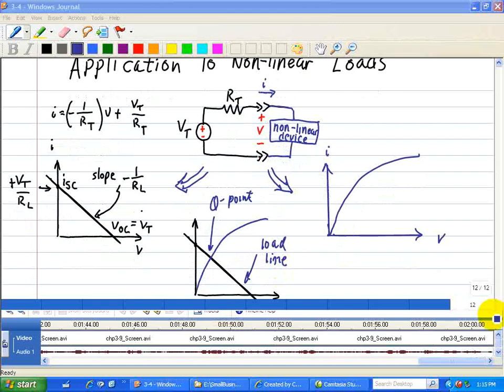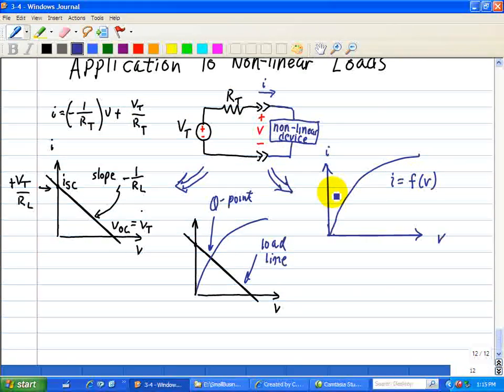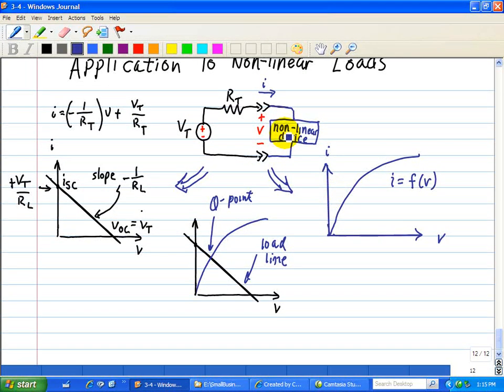So here's the equation for the source circuit, and here's the equation of the nonlinear device. Basically, its IV characteristics is described by this equation. It could be a diode or transistor, and we'll do that with an example next. So here we have these two lines once again intersecting at this point, and that's how we find the response of a nonlinear element using the IV characteristics.